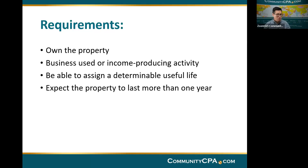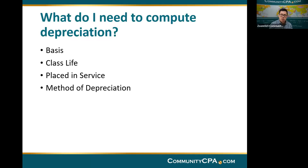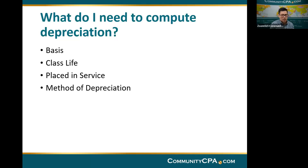So what information do you need once you qualify for depreciation? To compute the depreciation calculation, you need to know four things: the basis, the life, the place in service, and the method of depreciation. Basis is your investment in property for tax purposes — a value that often represents the cost you paid to acquire the property. This is a technical term in both accounting and taxes.